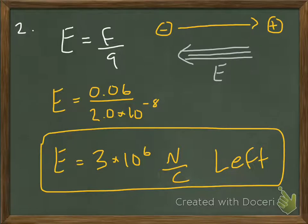Now you've got to think about what direction is the field. Well, if the field is positive to negative, then the field must be from right to left, or just to the left.